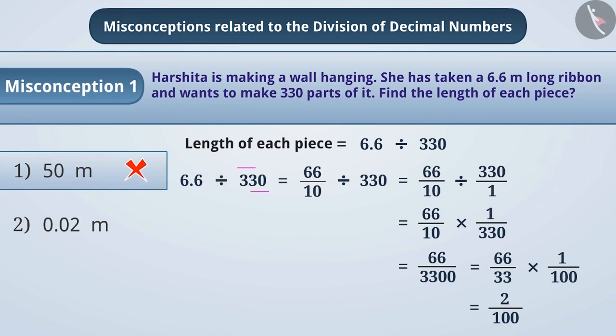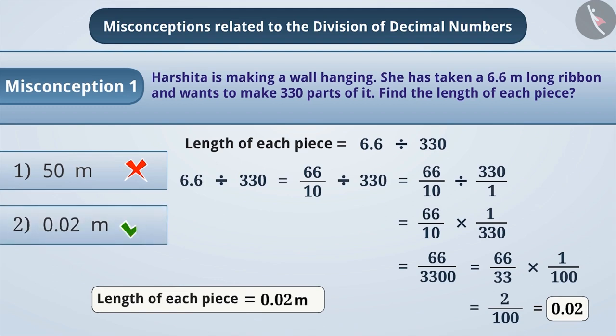6.6 divided by 330 will give you 0.02. Therefore, the length of each piece will be 0.02 meter.